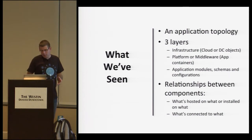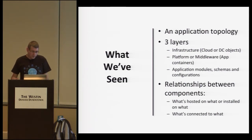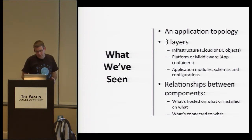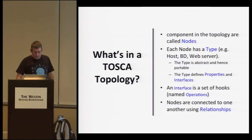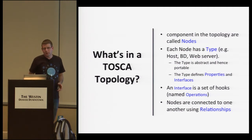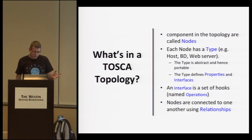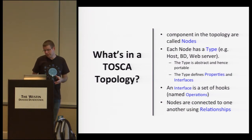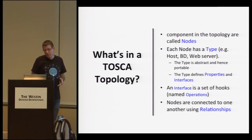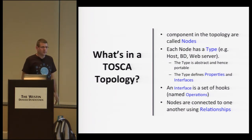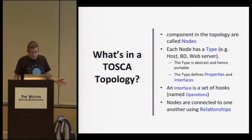TOSCA models the graphic screen we just saw. There are different layers — infrastructure, platform or middleware, and application modules — and the relationships: what's hosted on what and what's connected to what. In TOSCA there are terms and syntax exactly for that. All the components in the topology, regardless of their level, are called nodes. Each node has a type, so you can have object-oriented code reuse and encapsulation. There are hosts, databases, web servers, routers, networks — any level and type of component you may find in your application. It's an extendable set, so you can add types.